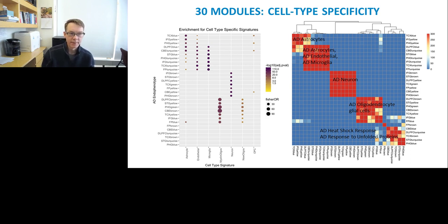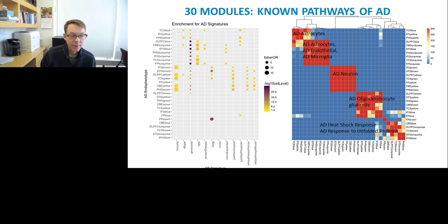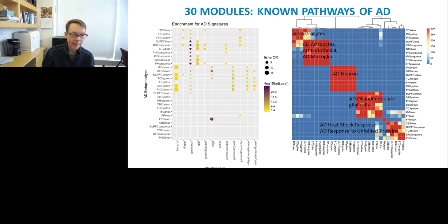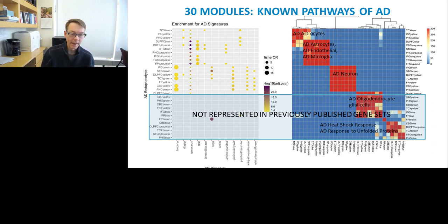We also looked at known pathways for Alzheimer's disease to see if there's an overlap between these modules and known associations — genes in dbGAP, genes from the IGAP large GWAS study, KEGG pathways related to Alzheimer's disease, OMIM annotations, etc. We find that the three major blocks — astrocytes, inflammation, and neurons — are all strongly enriched in this known information. Whereas the oligodendrocyte and stress response modules are not represented in the published annotated gene sets, suggesting those may be new information. Of course that is joined by the known information, giving us a more complete catalog of Alzheimer's pathology.